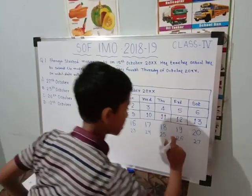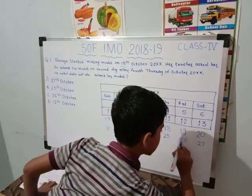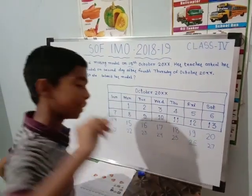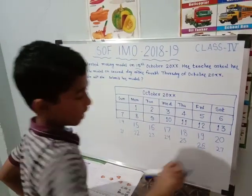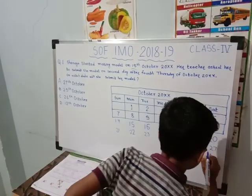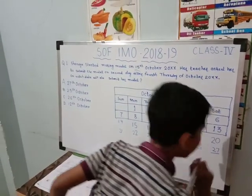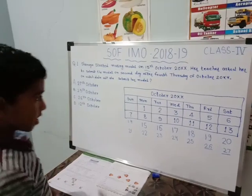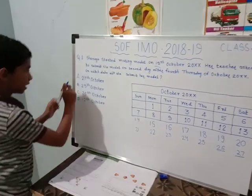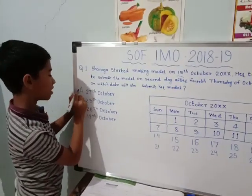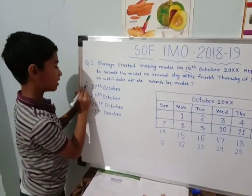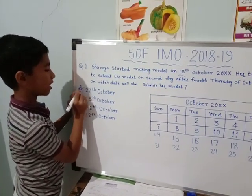The second day after the 4th Thursday is the 26th, and after the second day the answer would be the 27th. So the correct answer is A.